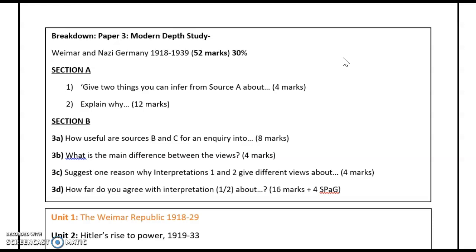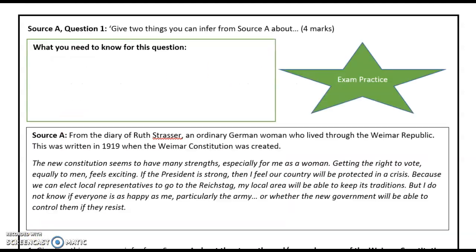The question reads: give two things you can infer from Source A about... This is worth four marks and should take you no longer than five minutes to answer, including the time taken to read through the source. You need to make an inference and then provide supporting evidence.